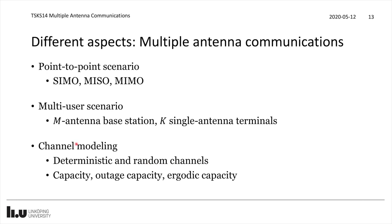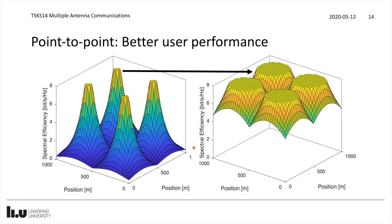In those different cases we can talk about either conventional capacity for deterministic channels, or for random channels we can talk about outage capacity or ergodic capacity, depending on how quickly the channels are evolving. When it comes to point-to-point scenarios, what we are after is to improve performance for a particular user. Say we have a network with four base stations and the user is located somewhere — the spectral efficiency in bits per second per hertz depends on the channel conditions and the technology. If you are close to the base station you might get the highest performance, assumed here to be 8 bits per second per hertz.